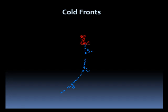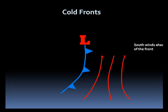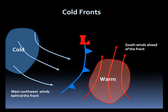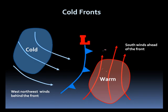Cold fronts are represented by a blue line with triangles called barbs on a weather map. The barbs point in the direction the front is moving. Cold fronts are almost always associated with an area of low pressure. Out ahead of the front, the winds are from the south, with west to northwest winds behind the front. Look for falling temperatures as the cold front moves through, sometimes as much as 5 to 10 degrees in an hour.